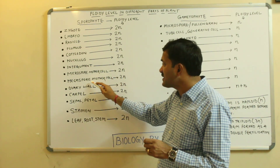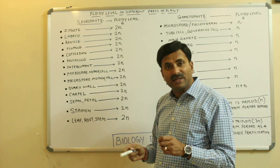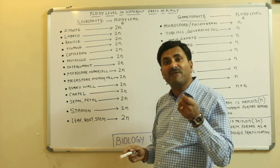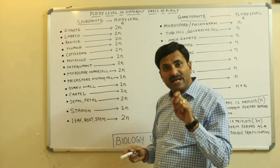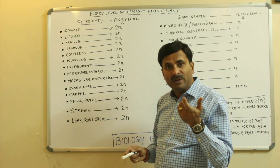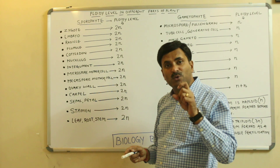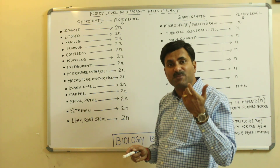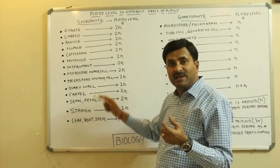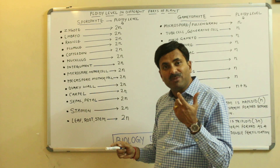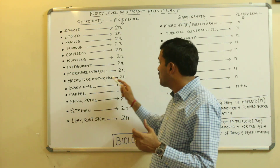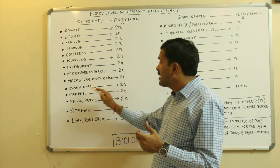In exactly the same way, the megaspore mother cell is found inside the megasporangium — which is the ovule. The megaspore mother cell, just like the microspore mother cell, has the ploidy level of 2N.